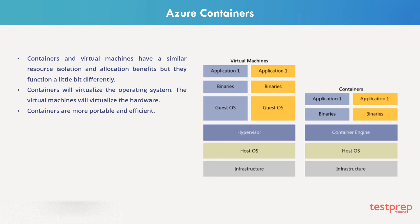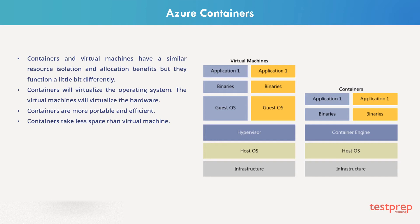Each container will then host an application and its dependencies, as you see in the picture. Application 1 and 2 have different sets of dependencies, or binaries, or libraries, but still they are sitting on the same virtual machine. Containers take less space than virtual machines, whereas virtual machines are abstraction layers on the physical hardware.